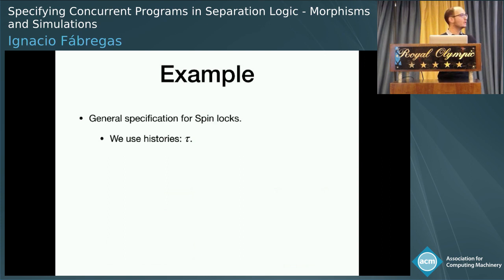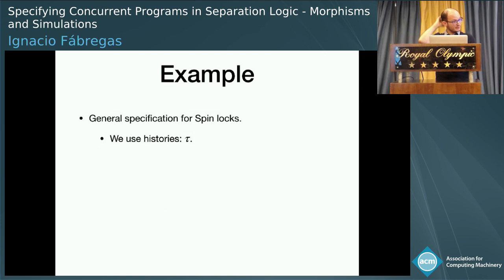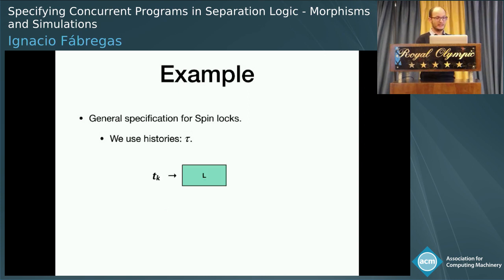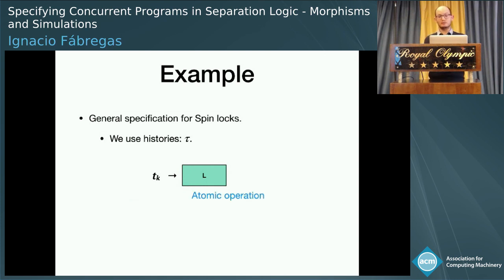This is because we want to have a very general specification for spin locks. Our idea is that we are going to derive from spin locks more complex locks. In order to do that, let me show you the specification for locking and unlocking. For that, we are going to use histories that we will represent with tau.